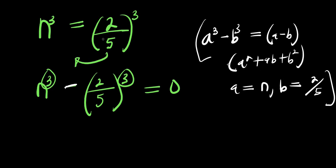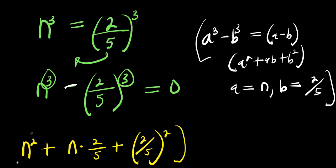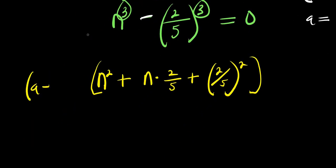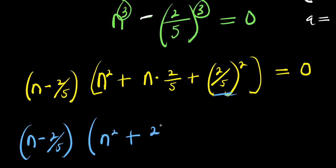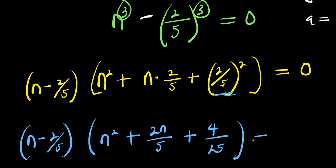So let's make use of this identity. We have a² which is n², plus ab which is n times 2/5, plus b² which is (2/5)². And there is an (a minus b) factor already, so I insert that: I have (n minus 2/5) times (n² plus 2n/5 plus 4/25), and this equals 0.